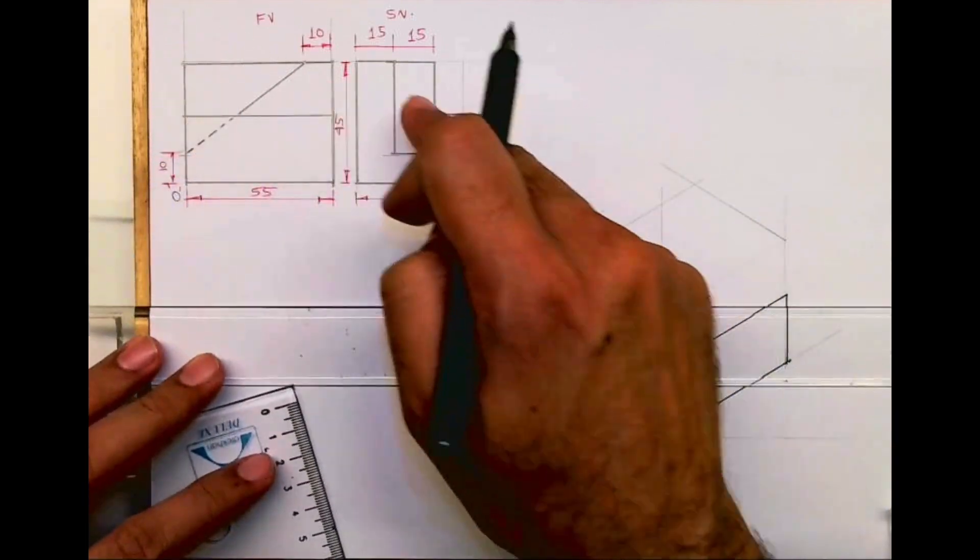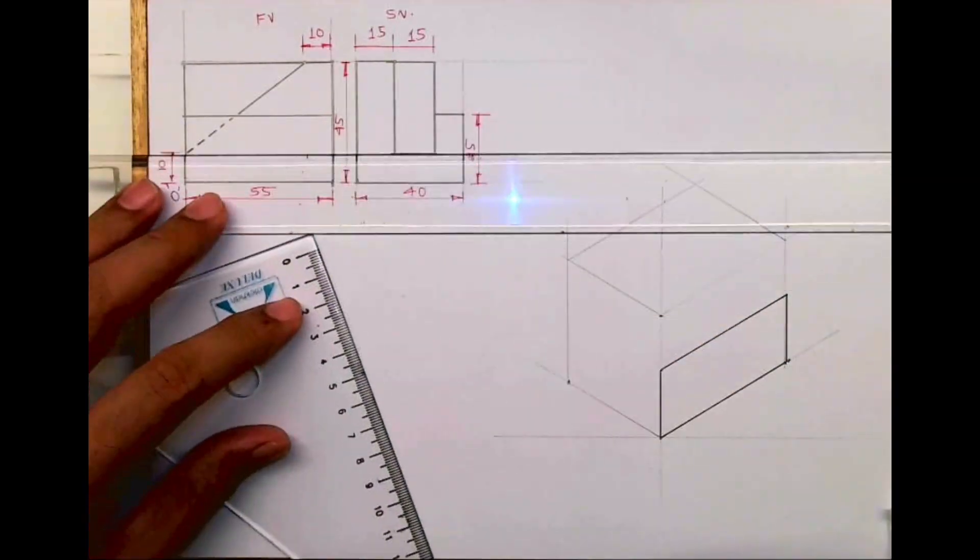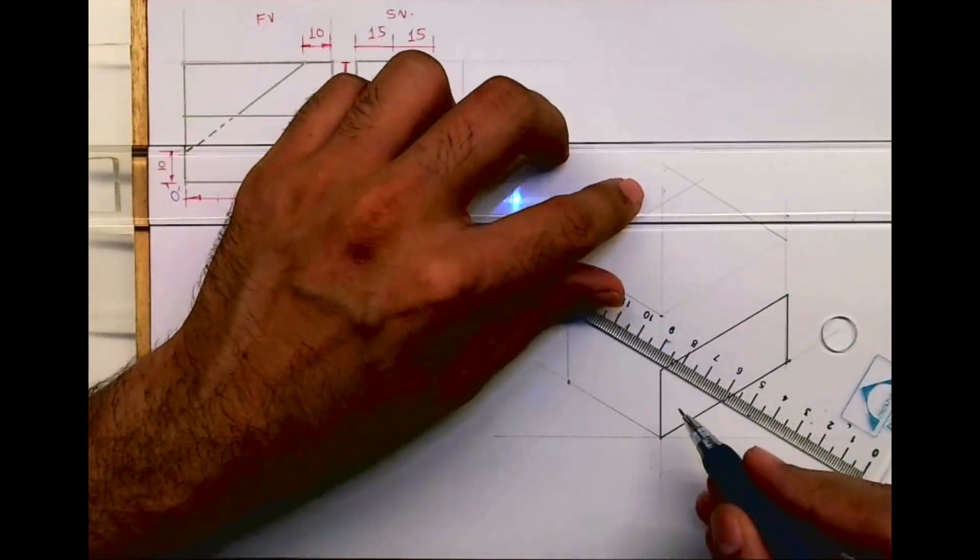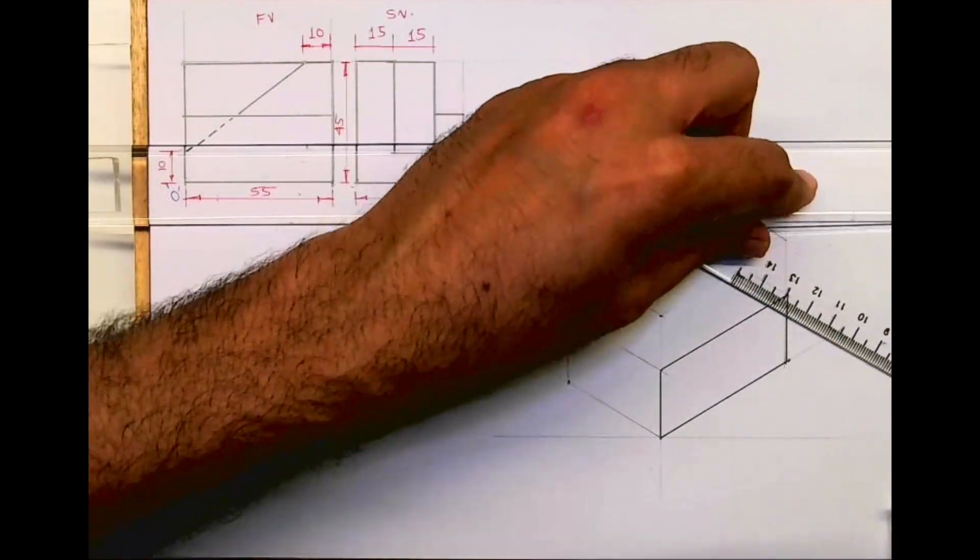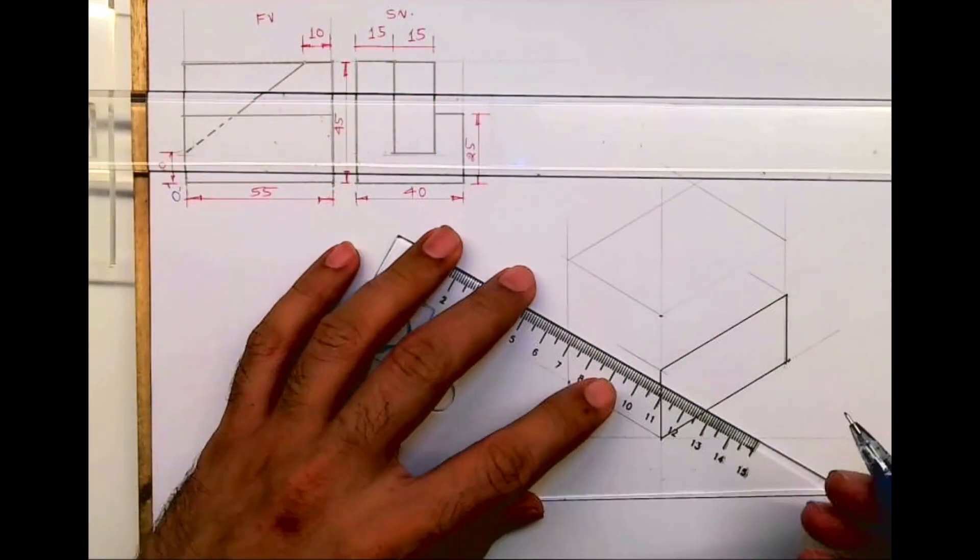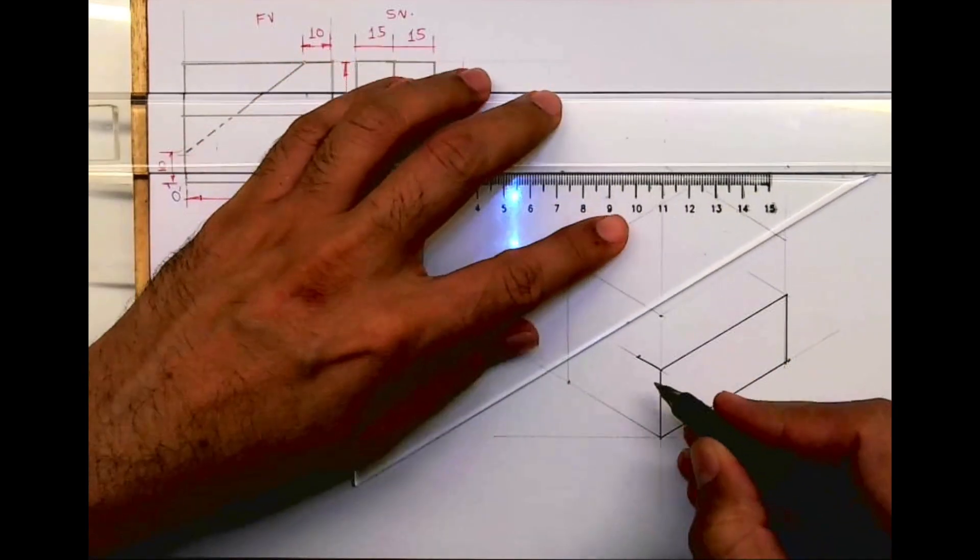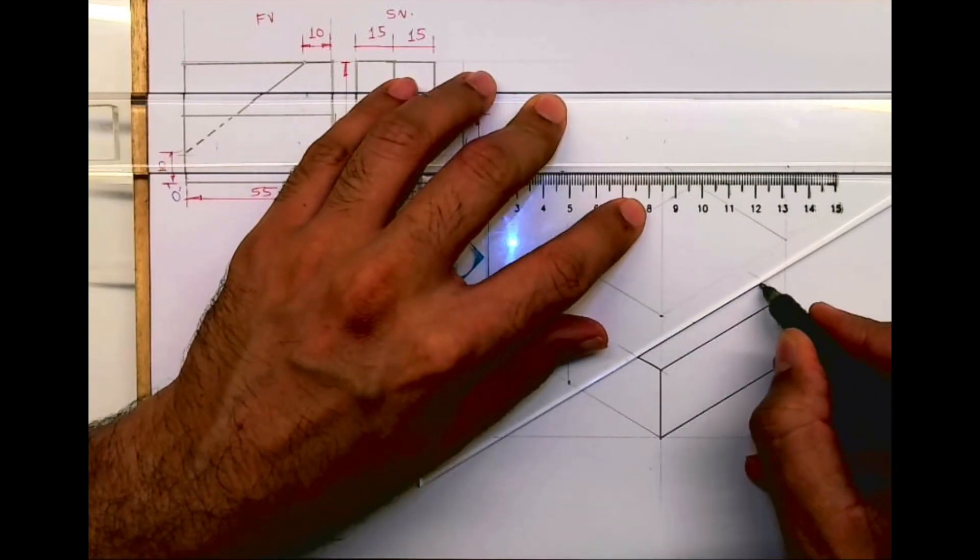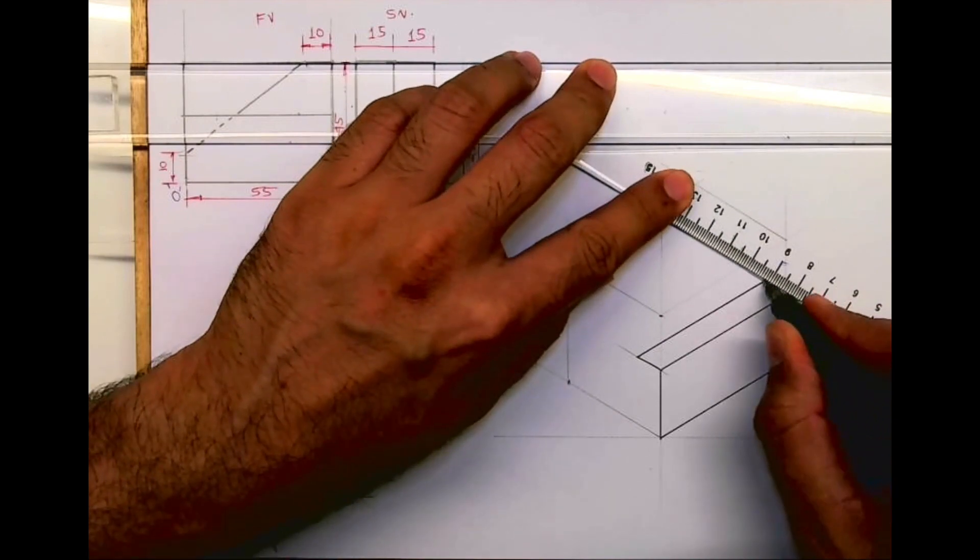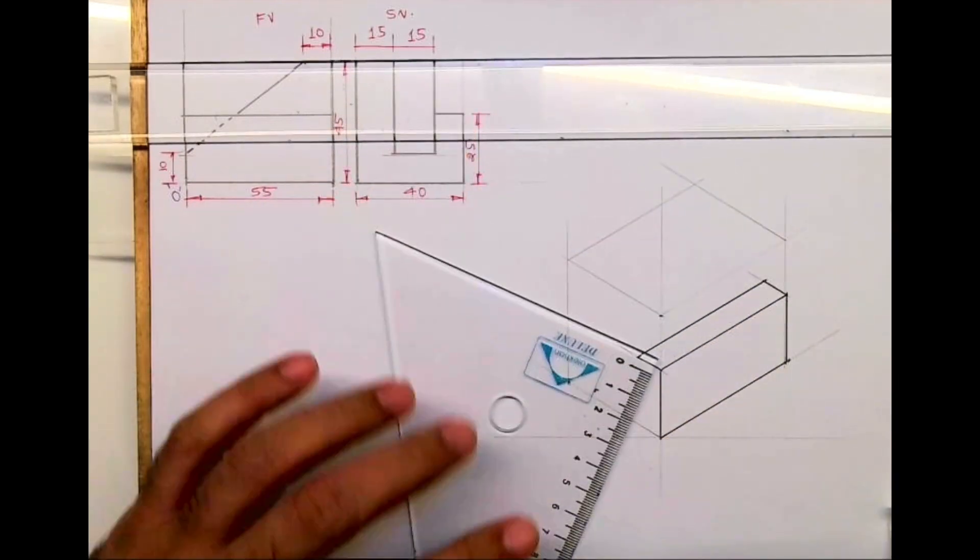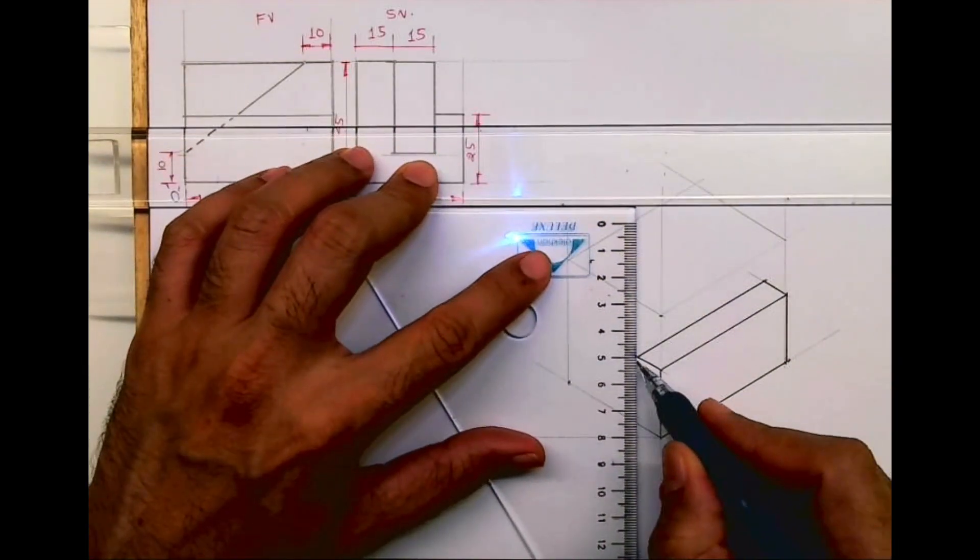Now this part is done. If you see, this part is behind. How much is it behind? You can take width 10mm. After that, you draw this line down.